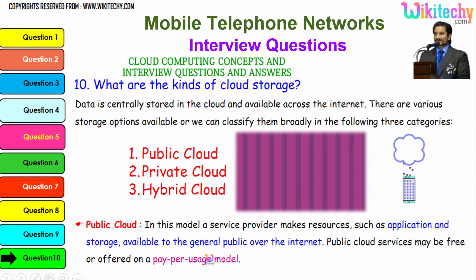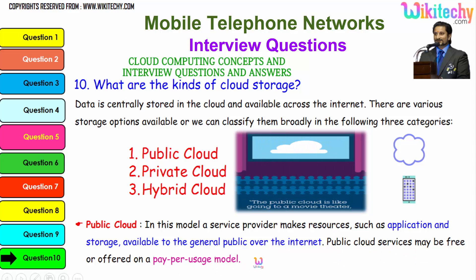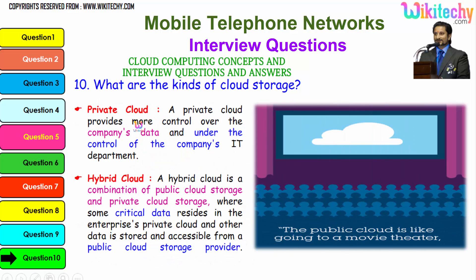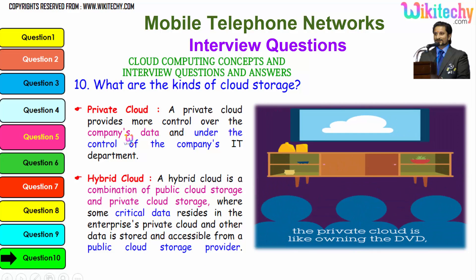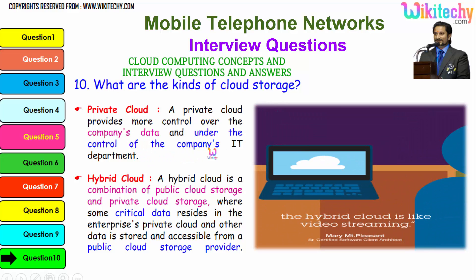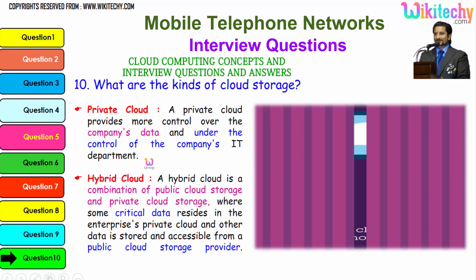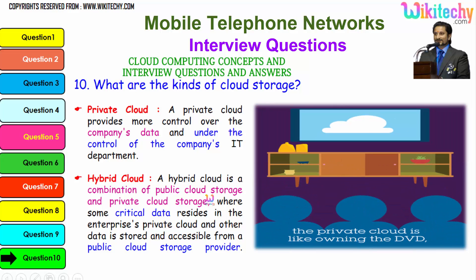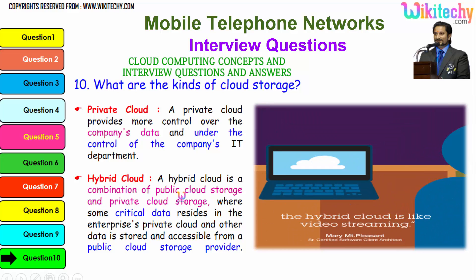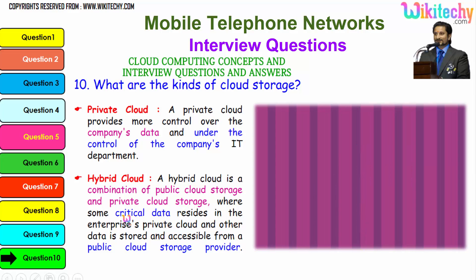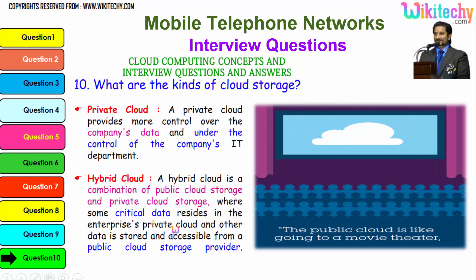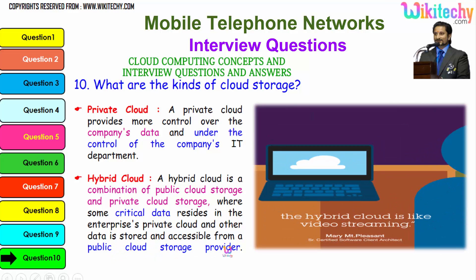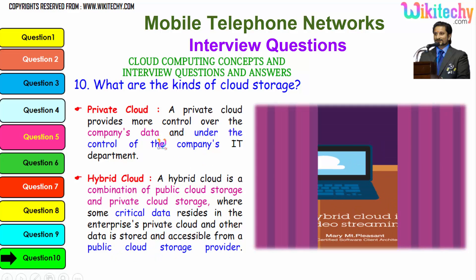Public cloud services may be free or offered on a pay-per-usage model. Private cloud provides more control over the company's data and is under the control of the company's IT department — it's really private to you. Hybrid cloud is like video streaming — a mix of private and public. It is a combination of public and private cloud storage, where some critical data resides in the enterprise private cloud and other data is stored and accessible from a public cloud storage provider.